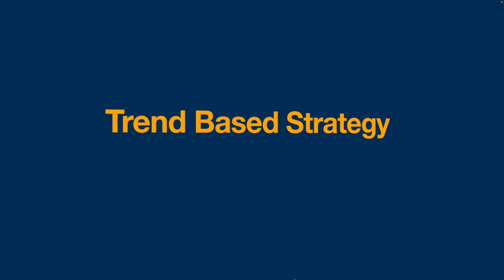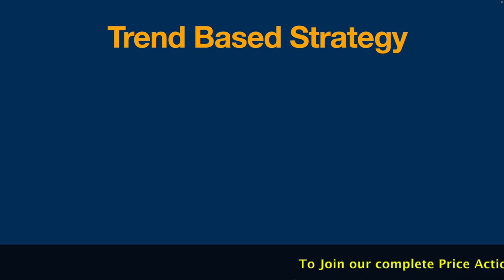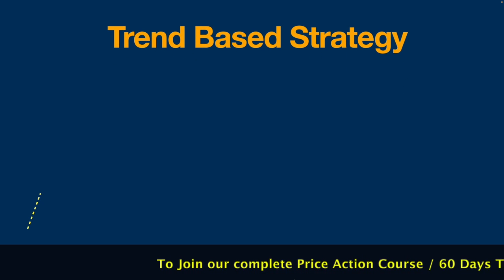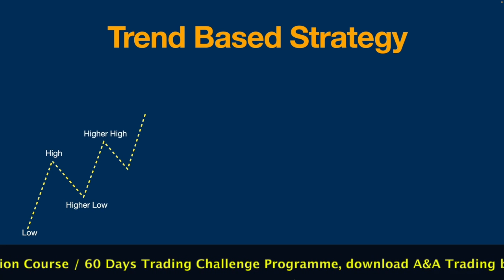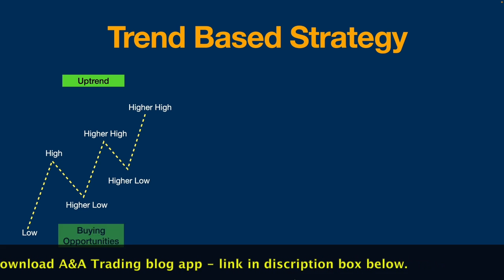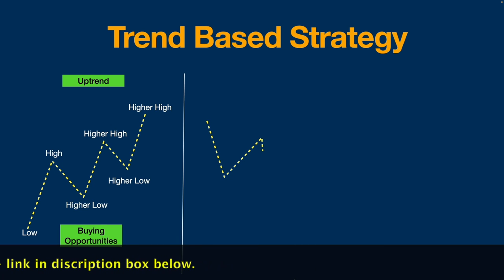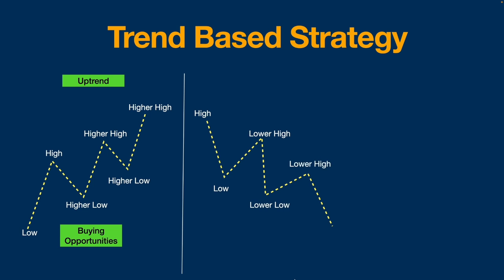The first thing we need to understand is this is a trend-based strategy. This means only when the market is trending will we use this strategy. When the market is making a movement forming higher lows and higher highs, it is in an uptrend — at this time we look for buying opportunities. If the market is forming lower highs and lower lows, it is in a downtrend — at this time we look for selling opportunities.